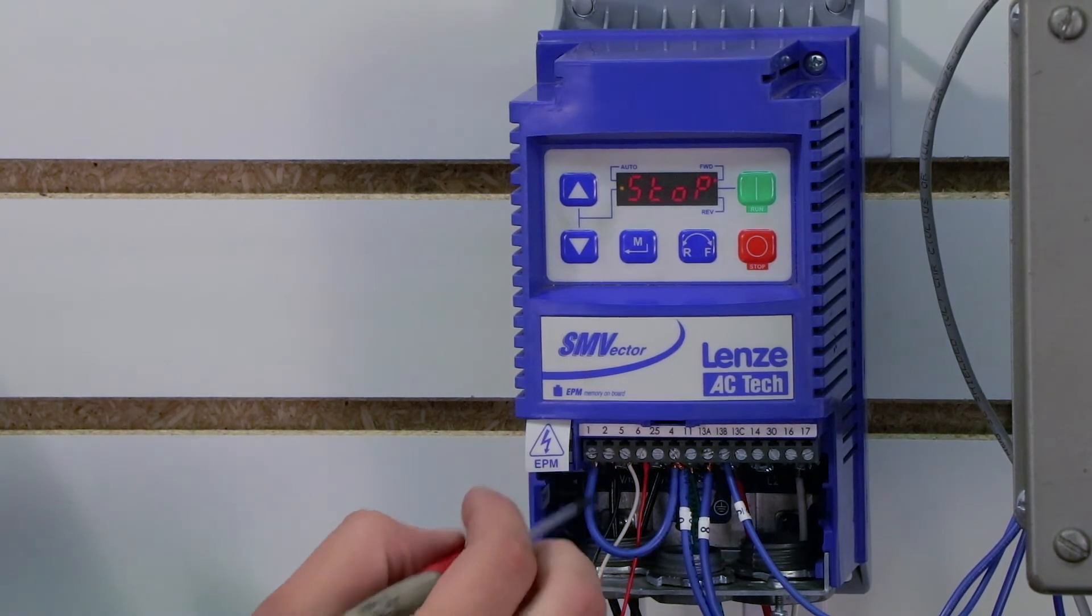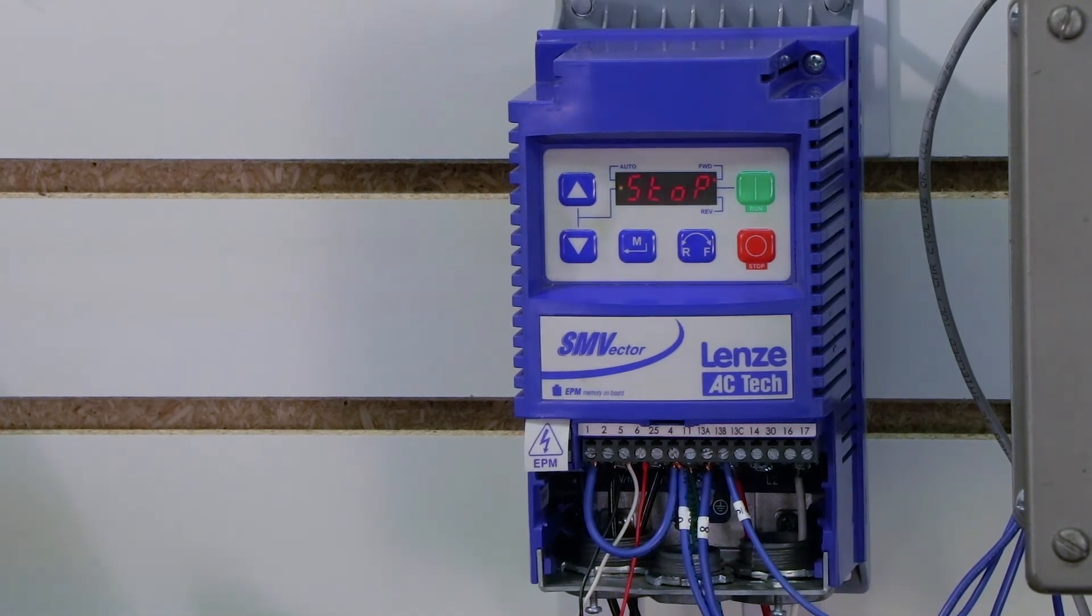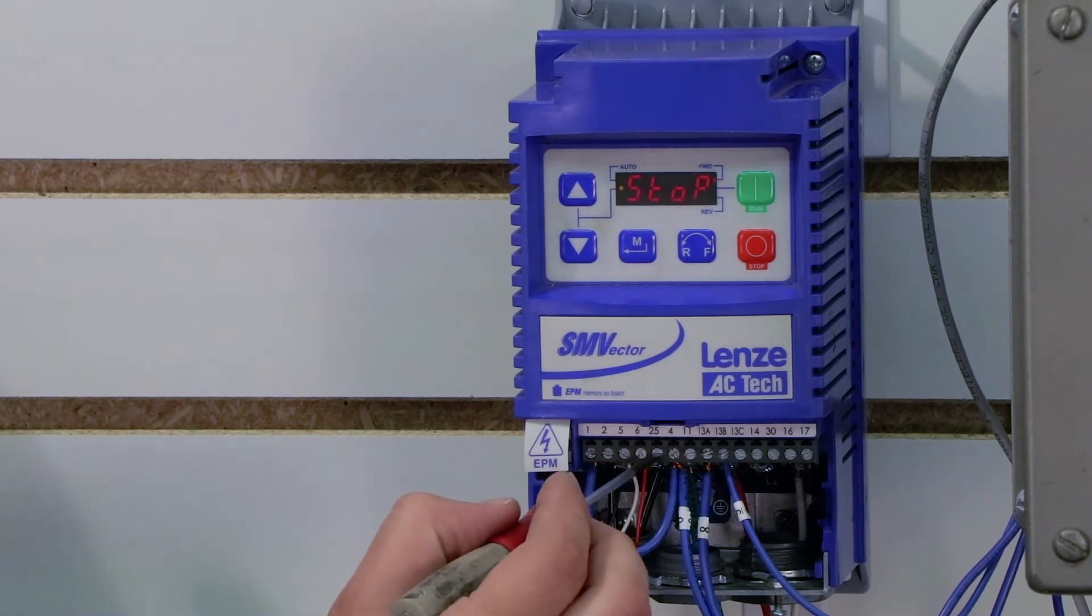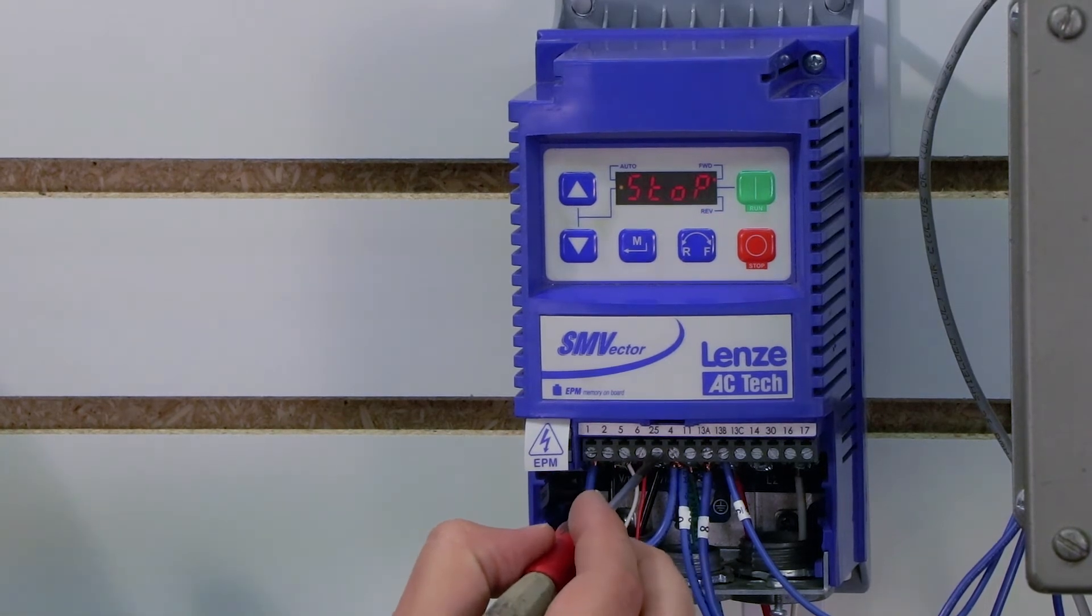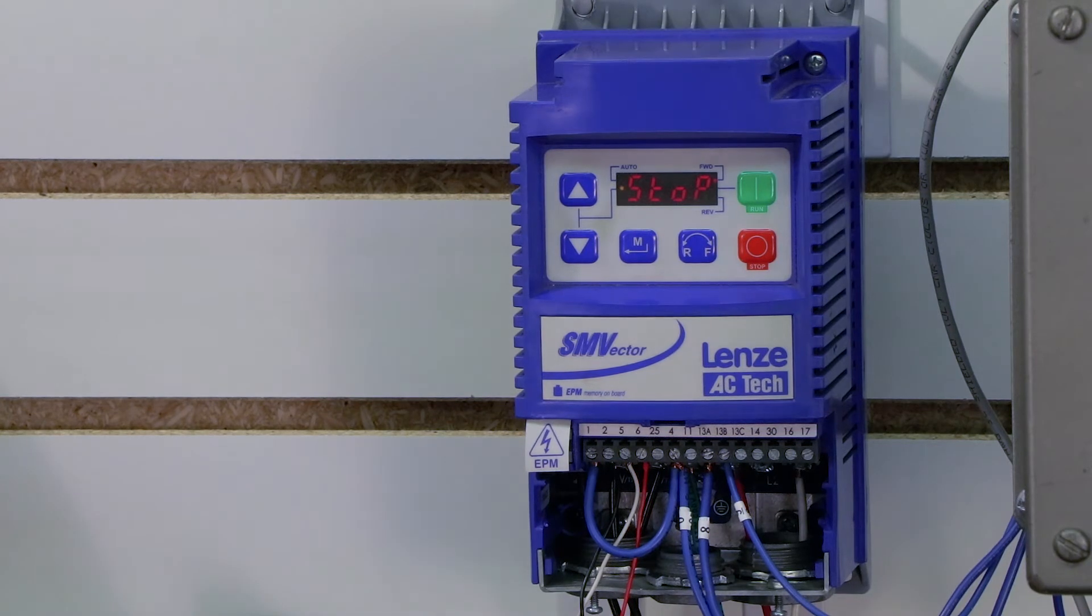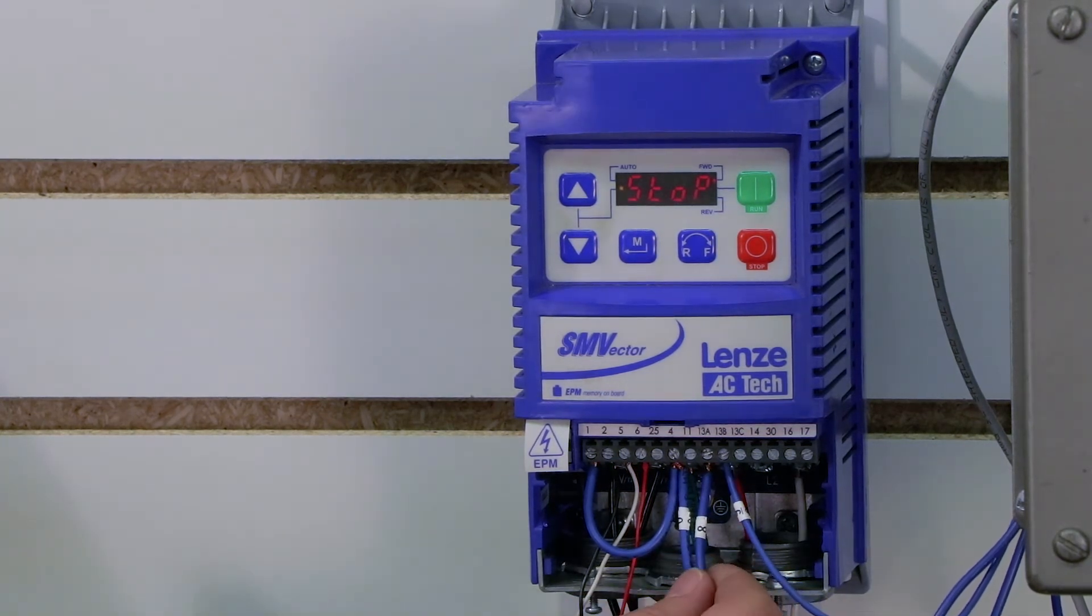And if you're using a 4 to 20 milliamp signal, then you're not going to use 2 and 5. You're actually going to use 2, which is again your common, and 25. 25 is going to be your 4 to 20 milliamp signal coming from your sensor. Now those are really the only wiring sections you need set up. So since I've got my input wired, I'm going to have to program that first. Let's start again in our manual.